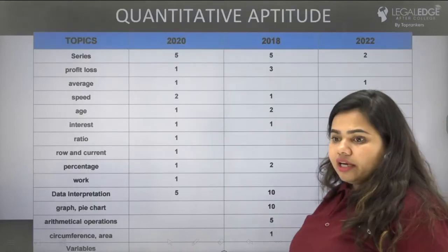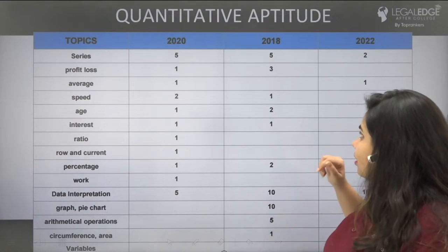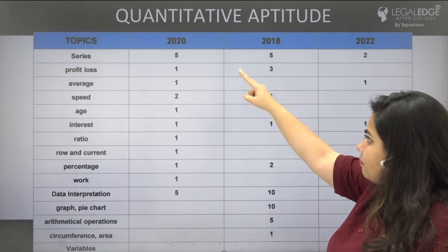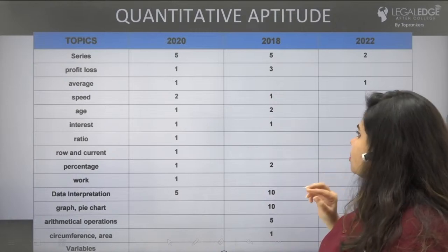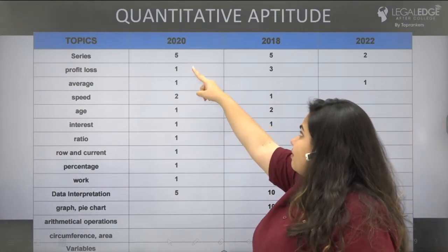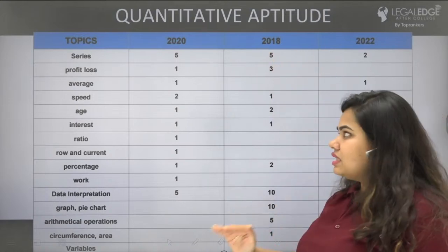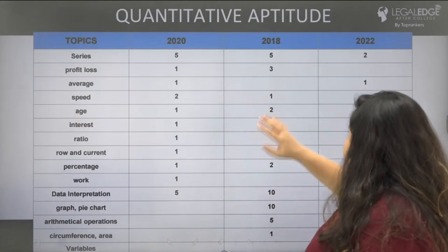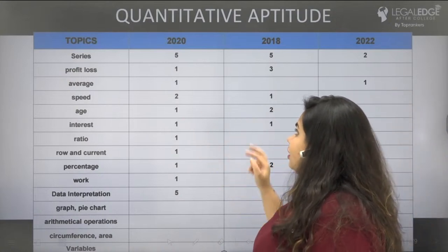Moving on to Quantitative Aptitude: in the number series, there were 5 questions in 2018, 5 questions in 2020, and it reduced to 2 questions in 2022. For profit and loss, there were 3 questions in 2018, 1 question in 2020, and 2 questions in 2022.